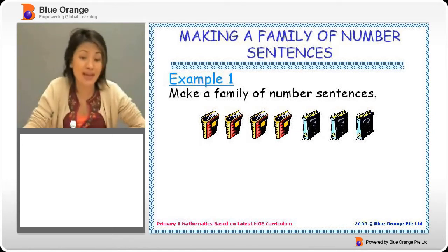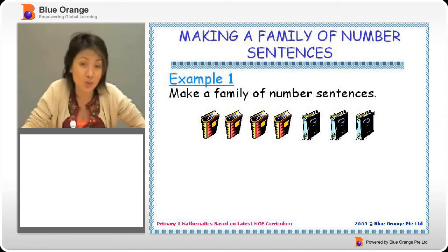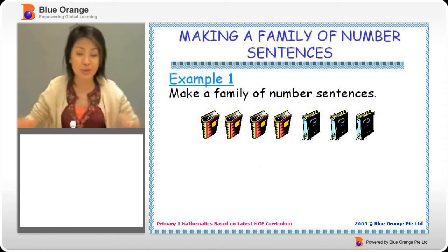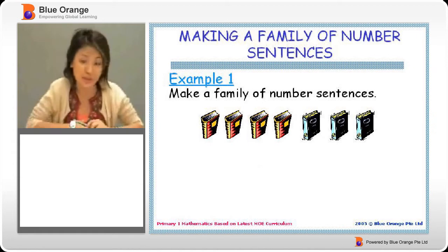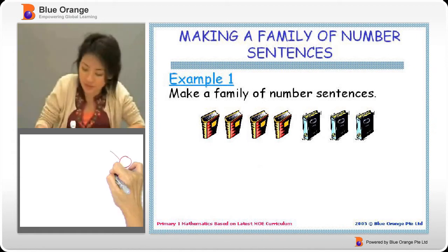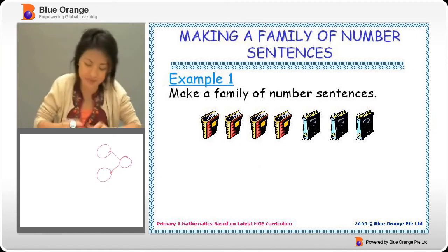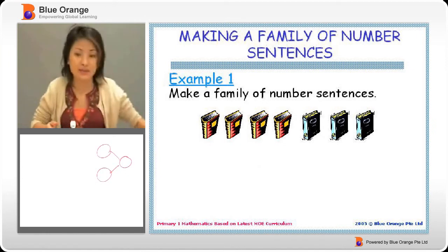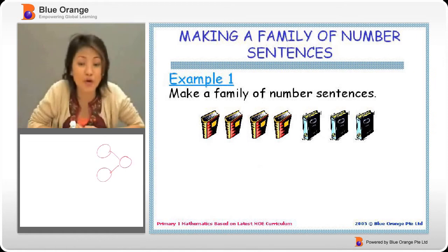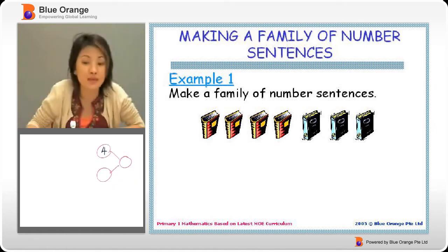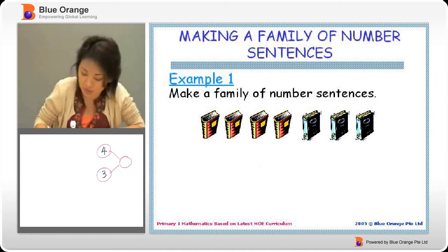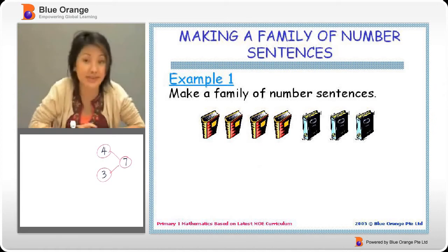If we want to make addition sentences, what do we do? We take the two small parts. So before we work on any of the number sentences, we use our number bonds to help us. We have four of the red and yellow books. So we have four here. And then three of the blue. And the total gives us seven. So this is our number bonds.